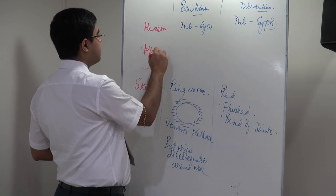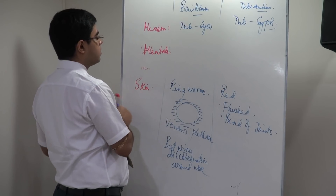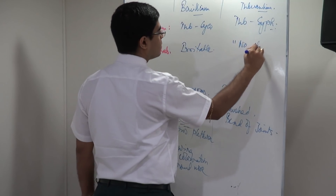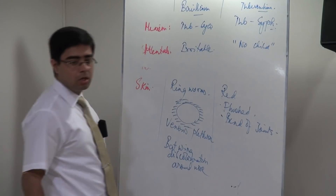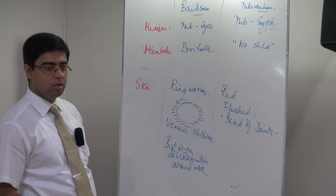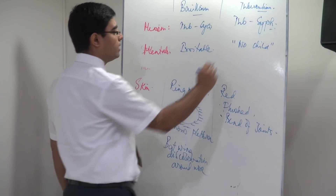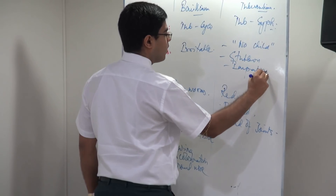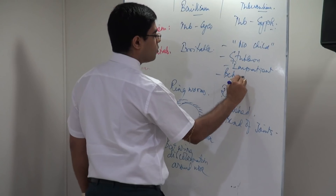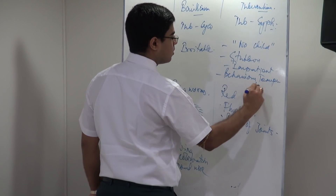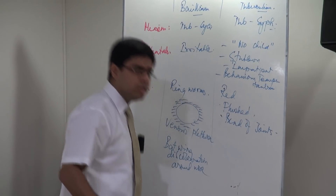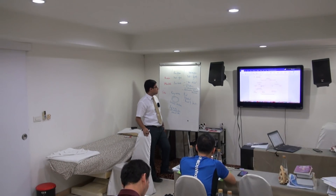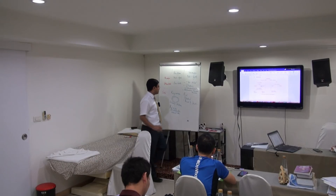If you think of mentals, Bacillinum is just irritable. But in Tuberculinum you always have to remember he is a 'no child' — food no, drinks no, go out no. Always no, very stubborn, very impatient, with behavioral temper tantrums. No fears except dogs — fearless except for dogs.